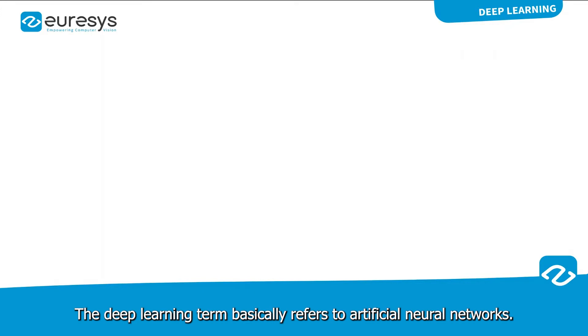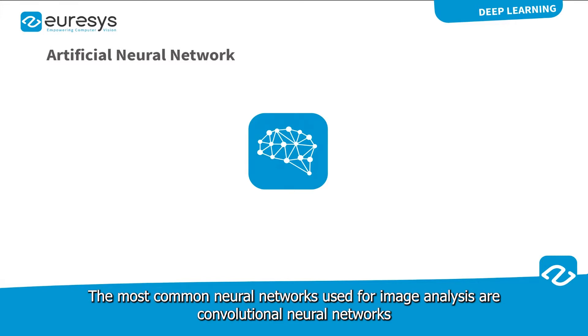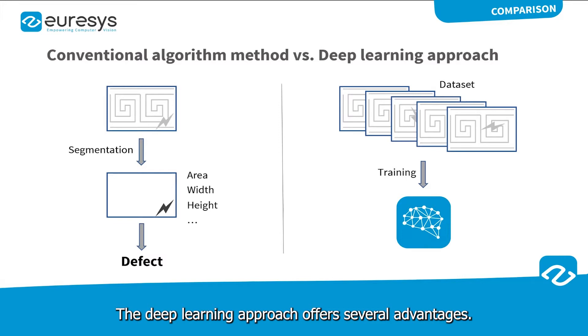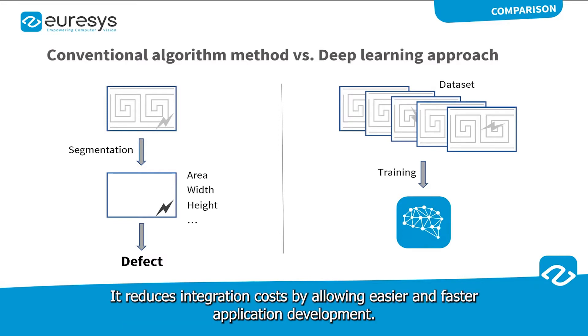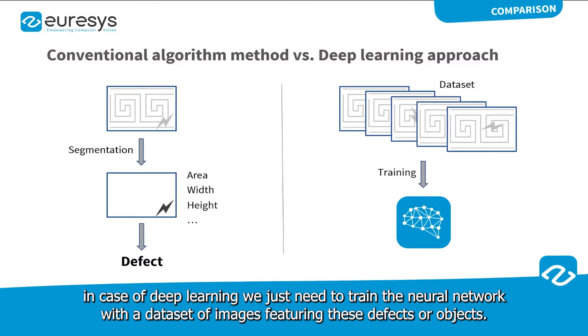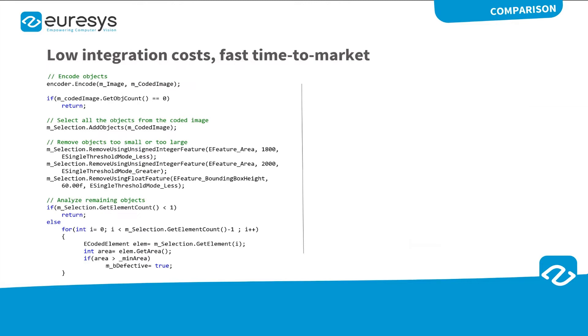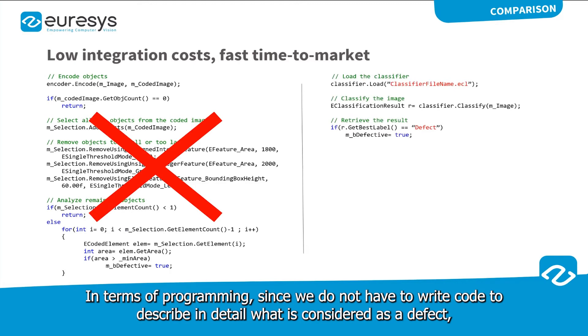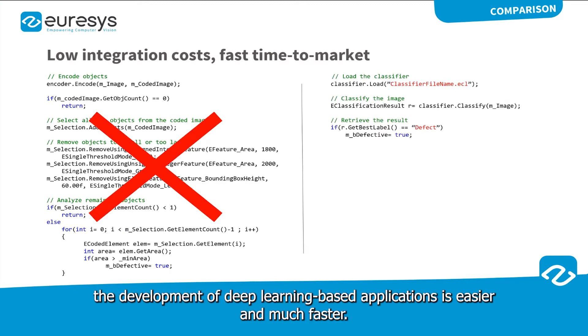The deep learning term basically refers to artificial neural networks. The most common neural networks used for image analysis are convolutional neural networks. The deep learning approach offers several advantages. It reduces integration costs by allowing easier and faster application development. Unlike rule-based algorithms where we must provide a detailed description of the object or defect we are searching for, in case of deep learning we just need to train the neural network with a dataset of images featuring these defects or objects. In terms of programming, since we do not have to write code to describe in detail what is considered as a defect, the development of deep learning based applications is easier and much faster.